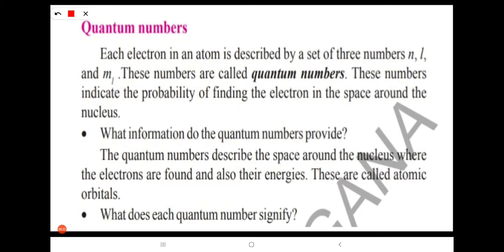Each electron in an atom is described by a set of three numbers: N, L, and ML. These numbers are called quantum numbers. They indicate the probability of finding the electron in the space around the nucleus. To find out the exact position of the electron around the space relative to the nucleus, these quantum numbers are used.